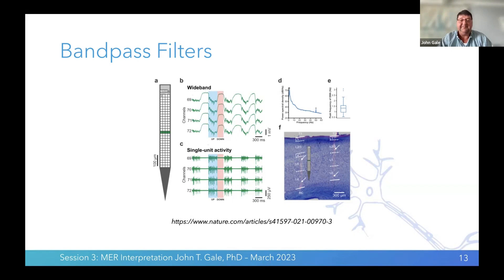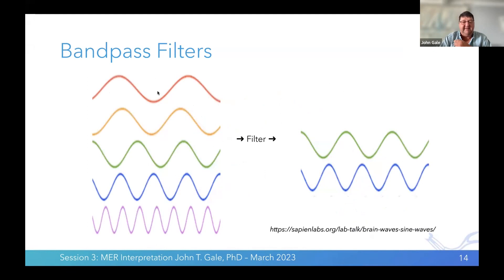The local field potential shows what's happening mostly dendritically or in the matrix around the neuron. Single unit activity tells you the generation of the action potential — the output of a single neuron. The LFP traces are collections of neurons; single unit are single neuron outputs. When recording from the brain, there are many frequency components — slow and very fast. We design our filter to get only the frequencies that are important: single unit uses a particular frequency range, local fields use a different range.